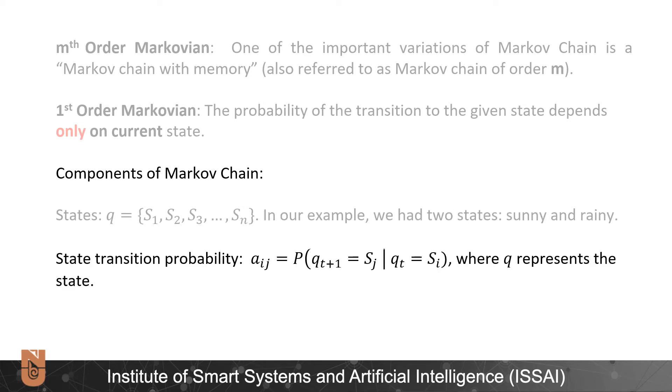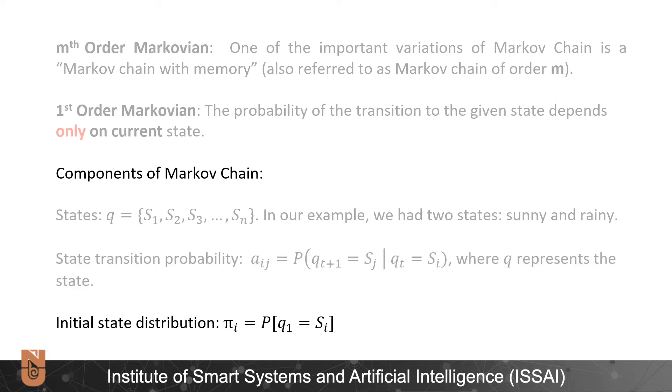Next we have transition probability. Let's denote it as A. So here Aij is the probability that if you are now at state Si the next state will be Sj. And finally we need initial state distribution to start with. So pi_i is the probability to start at state Si where q1 is a state at time 1.